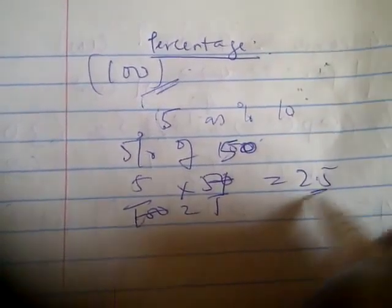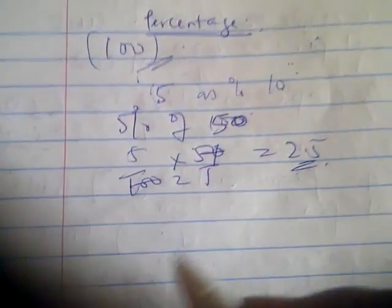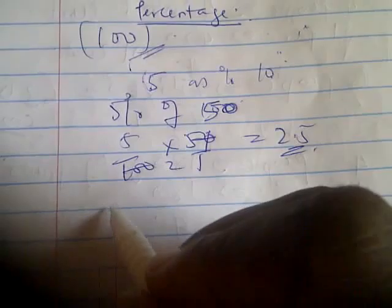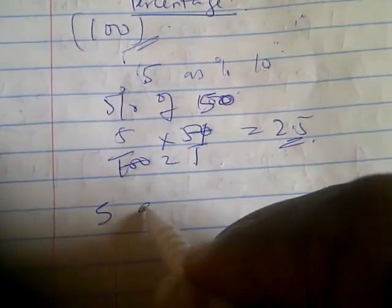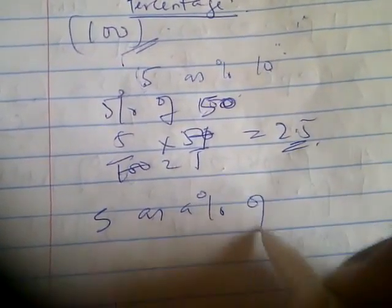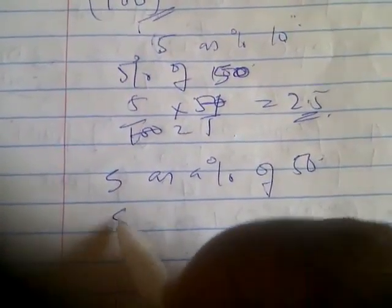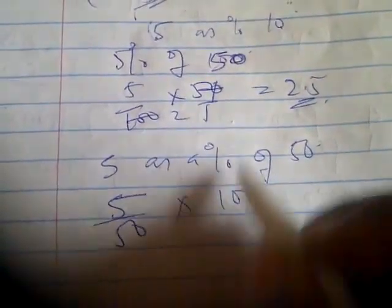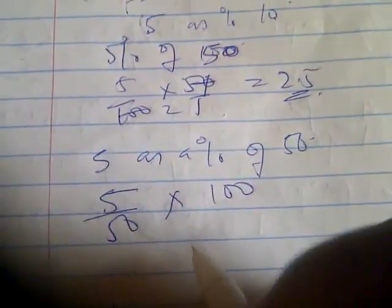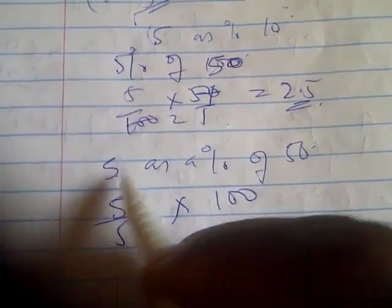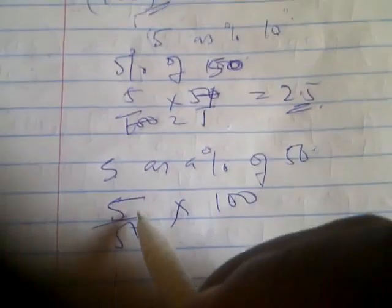Now they can ask you express 5 as a percentage of 50. In that case, they are asking you to find 5 of 50 in 100. Remember, percentage represents 100. Just bear that in mind. So if they ask you to express 5 as a percentage of 50, you're asking to find 5 in 50 out of 100.